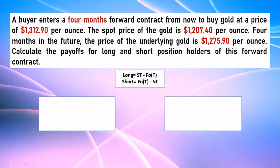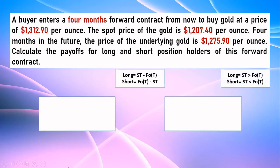For short, the formula is the opposite of long. For long it is S(T) minus F(0,T), and for short it is F(0,T) minus S(T). A buyer — the long position — always expects that the future spot price is higher than the forward price, because that will be profitable. For the seller — the short position — the expectation is the opposite: the future spot price will be lower than the forward price.